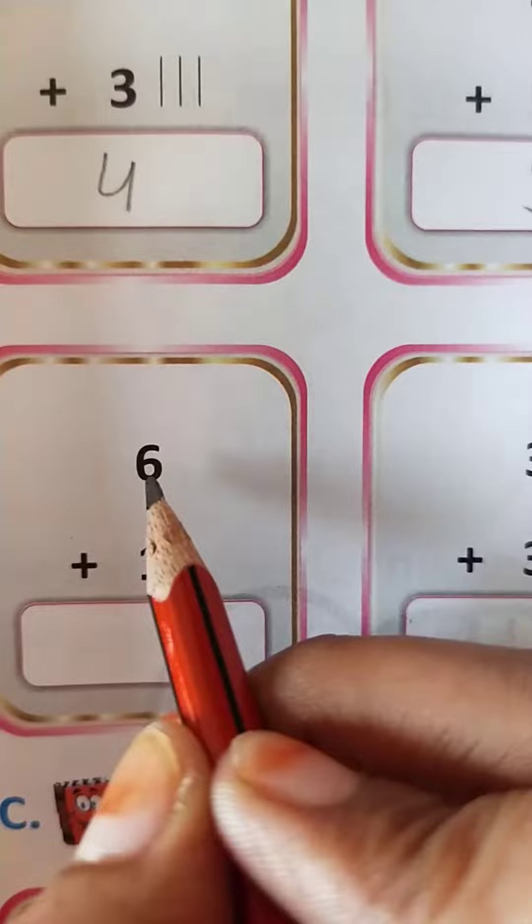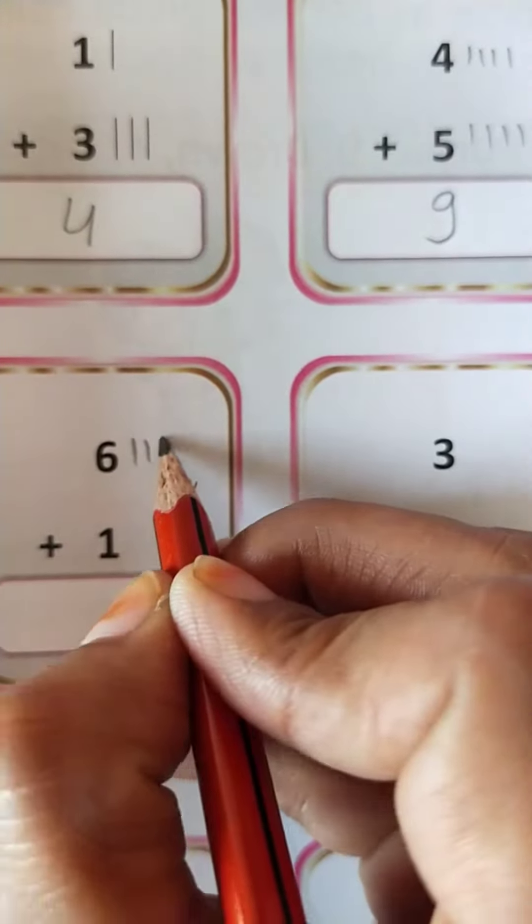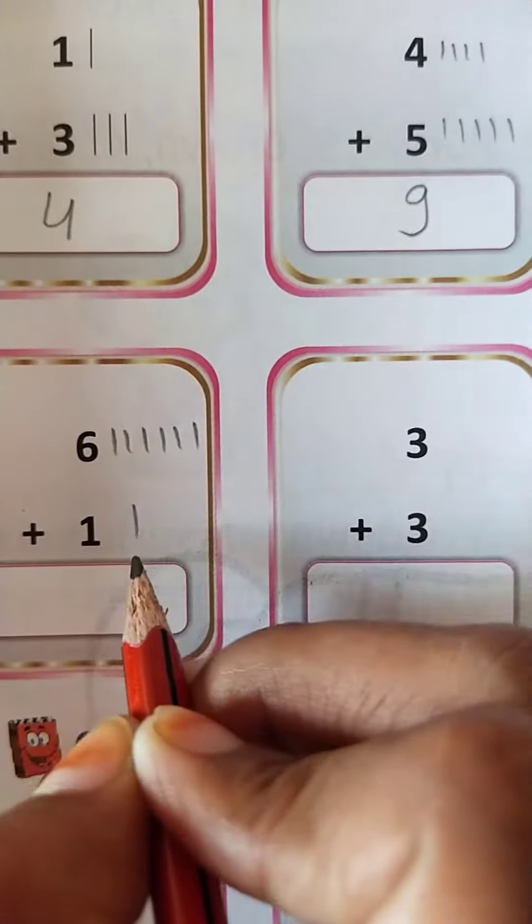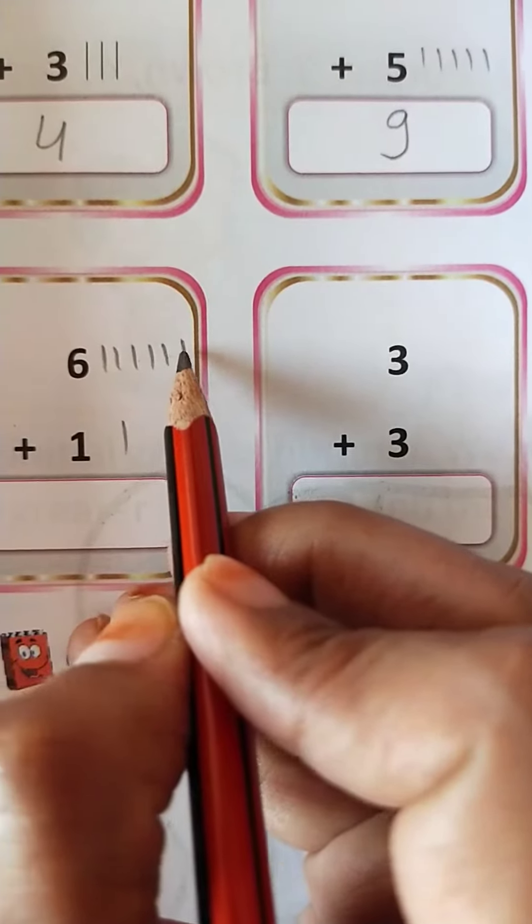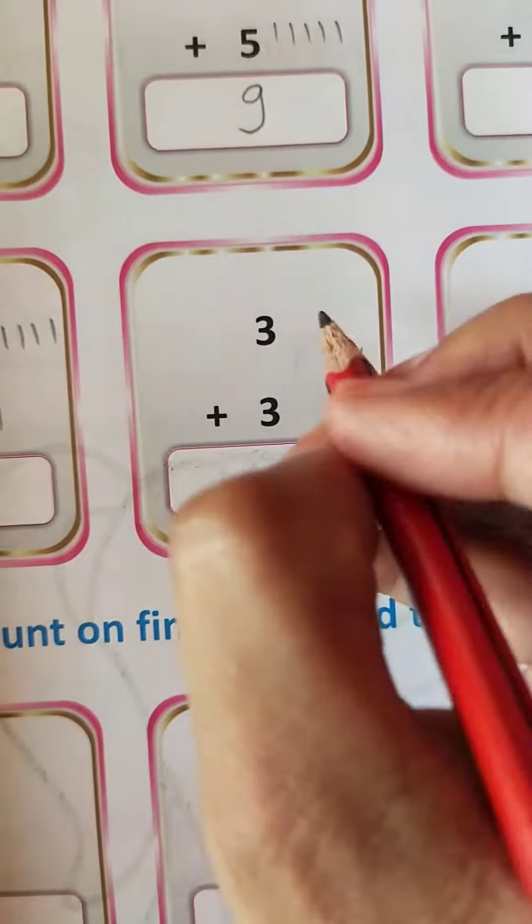Now come to the page number 27. So here 6. Now you will draw the 6 lines. 1, 2, 3, 4, 5, 6. And here 1. So you will draw the 1 line. Now you will count all. 1, 2, 3, 4, 5, 6, 7. So you will write 7 here.